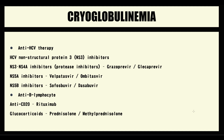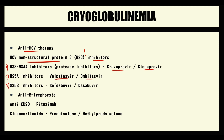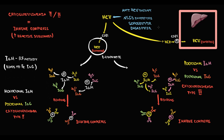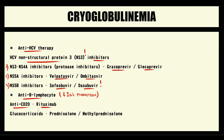Treatment of cryoglobulinemia types 2 and 3 is based on elimination of hepatitis C using non-structural protein 3 (NS3) inhibitors — targeting the causative factor. The second goal is to decrease immunoglobulin production by reducing B-lymphocytes, typically using rituximab, an anti-CD20 antibody. Since CD20 is present on B-lymphocytes, rituximab binds to them and induces apoptosis, lowering immunoglobulin and immune complex levels. Glucocorticosteroids are also added because they decrease lymphocyte counts.